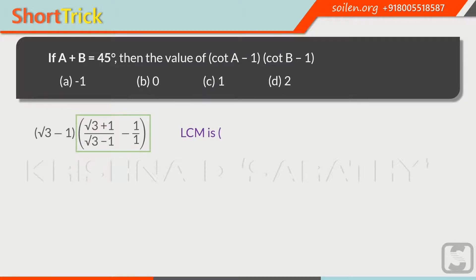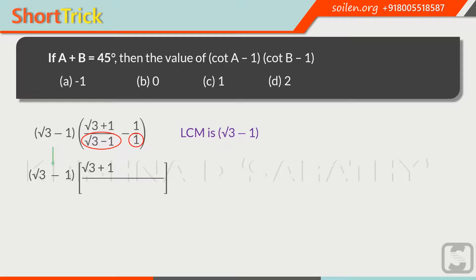Let's see how we can solve this by the LCM method. Here, the LCM is the square root of 3 minus 1. Now we can write: this term is equal to our LCM, so here we can write the square root of 3 plus 1. Next, we have 1, so we will multiply by the LCM and write minus 1 times the square root of 3 minus 1. The square root of 3 minus 1 is cancelled out, and the last two steps are the same.